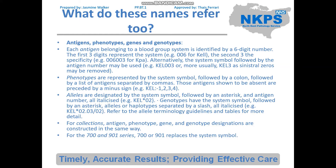Phenotypes are represented by the system symbol, followed by a colon, followed by a list of antigens separated by commas. Antigens shown to be absent are preceded by a minus sign. That sounds complicated, but it's going to make more sense when I have the whole table in front of me, so I'll go through that in more detail in a moment.